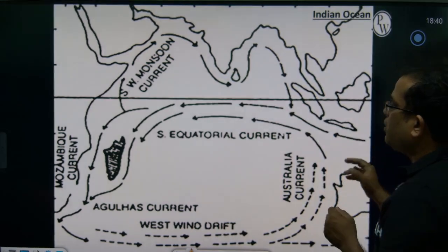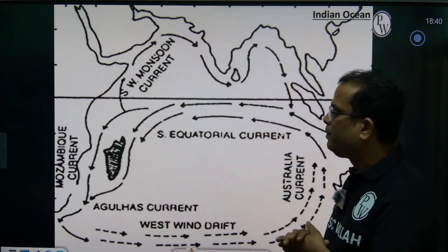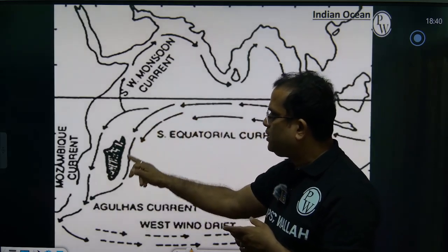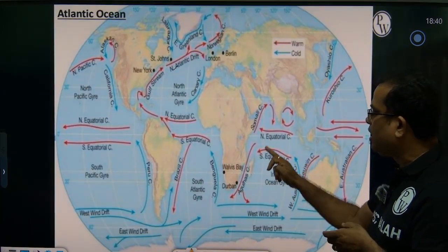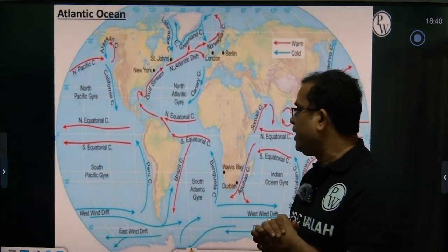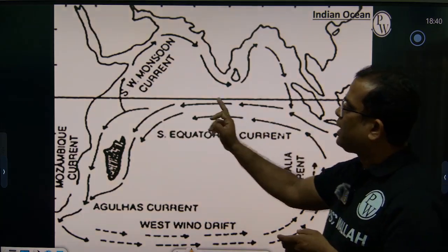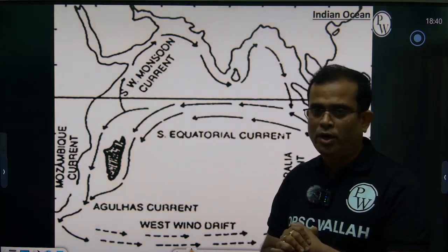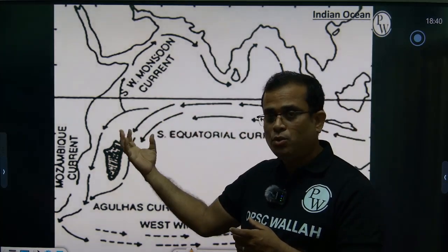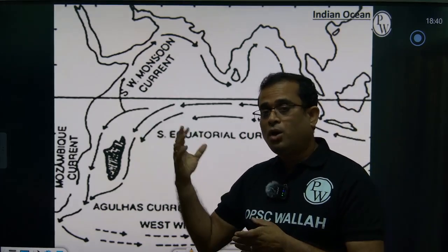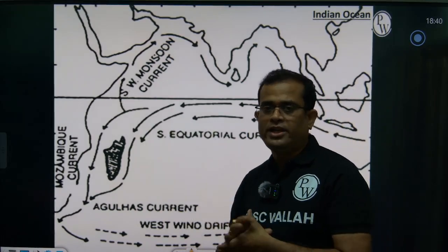In the Southern Indian Ocean, the Mozambique Current is a warm current. It then becomes the Agulhas Current, which is also a warm current, making a loop along the southern tip of Africa. On the African side near Somalia, the Somali Current is produced, which is a cold current. Because of the Somali cold current along the Somalia coast, the Somali Desert was created.